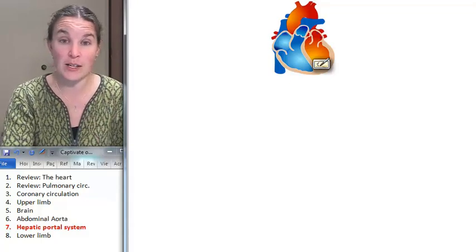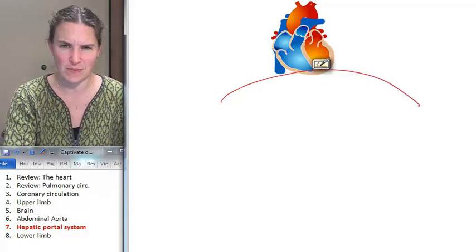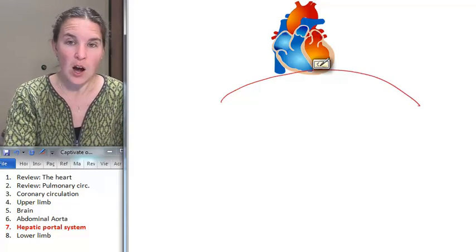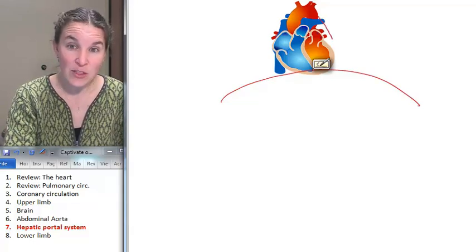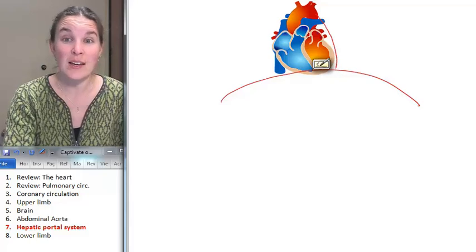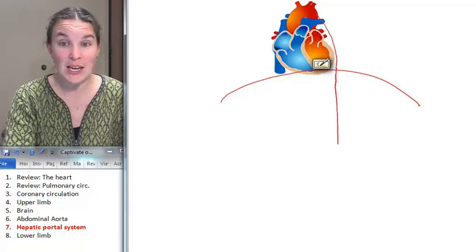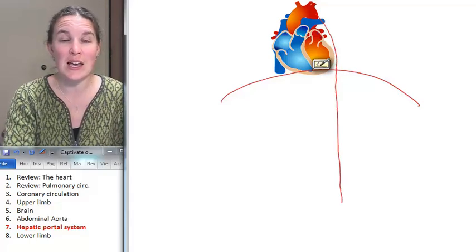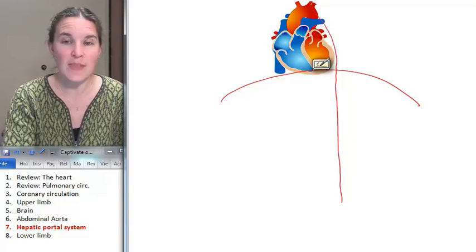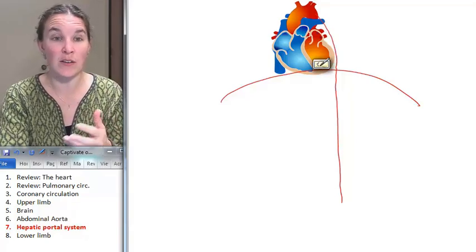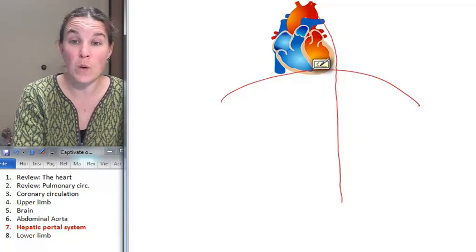Again, reviewing, coming from the heart, here's our diaphragm-ish. Our descending thoracic aorta enters the abdominal cavity and becomes the descending abdominal aorta. And there are a couple of branches of abdominal aorta that we want to keep track of.